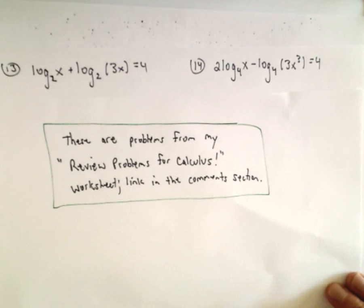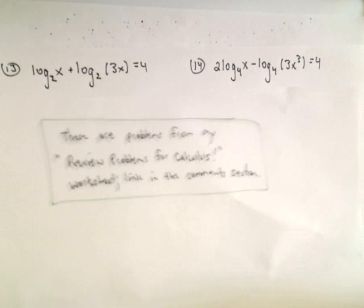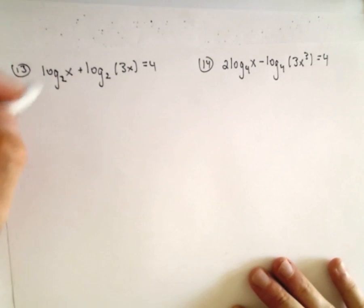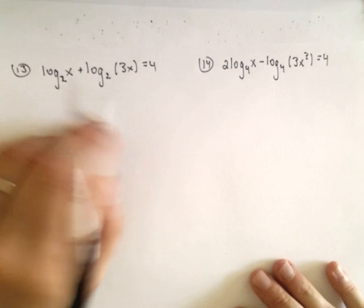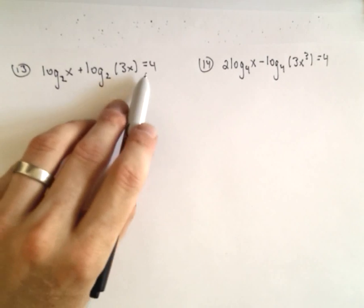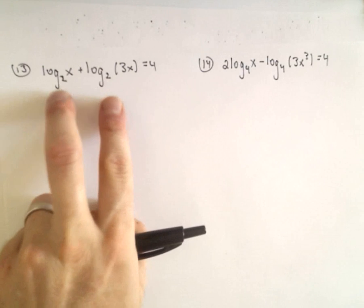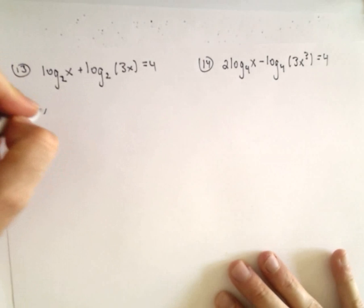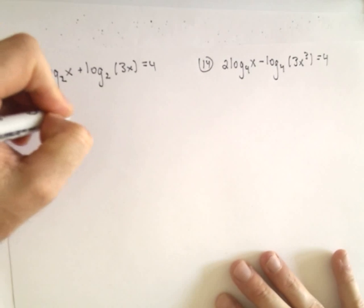Okay, here I'm going to do problems 13 and 14 for my review problems worksheet. A couple more logarithm equations. So in 13 here, notice we have log base 2 of x plus log base 2 of 3x equals 4. The main thing to notice is we have the same base. In this case, it's a base of 2. If you didn't have the same base, this problem would be much more difficult to solve.